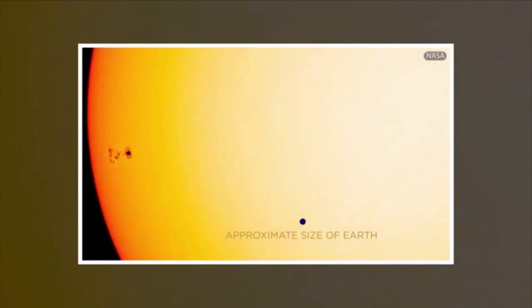Forecasters from the NOAA say that there is a 25% chance of M-class flares today, because the sunspot is directly facing our planet.